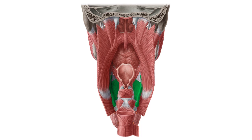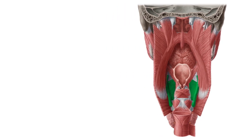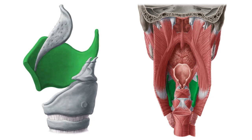The thyroid cartilage is the largest of the laryngeal cartilages and partially encloses the other cartilages. You can see the thyroid cartilage highlighted in green on both of these images. On the left side, we see it from a lateral view, and on the right image, you can see the thyroid cartilage from a posterior view with the open pharyngeal muscles.